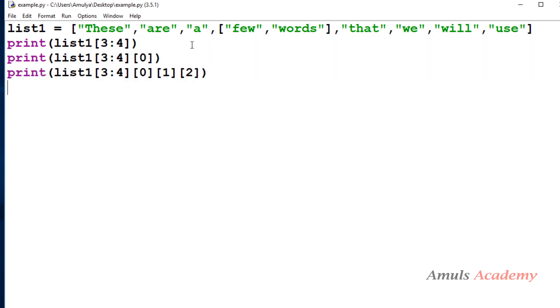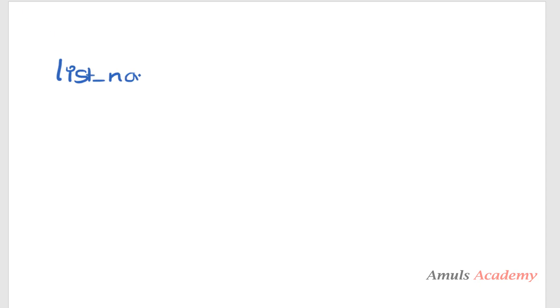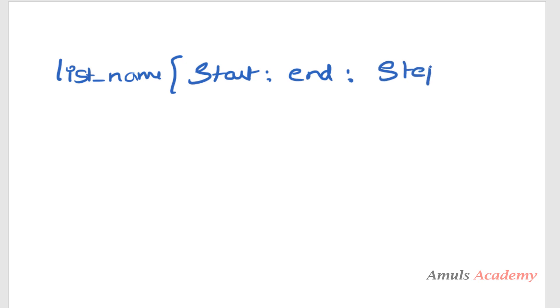To understand this program, you first need to understand the slicing operation as well as the nested list concept. The slicing operation gives you a sublist from the list. The syntax is: you mention the list name, then the start index, the end index, and optionally the step. The end value is exclusive, and the return output of this slicing operation is always a list.